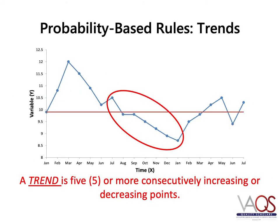This run chart provides an example of a trend. As you can see, there are six consecutive points that are decreasing. Note that there are two points in the trend that have the same value — remember that only the first point is counted towards the number of points needed for a trend. Shifts and trends are both easy to use as they require only visual inspection of the run chart.